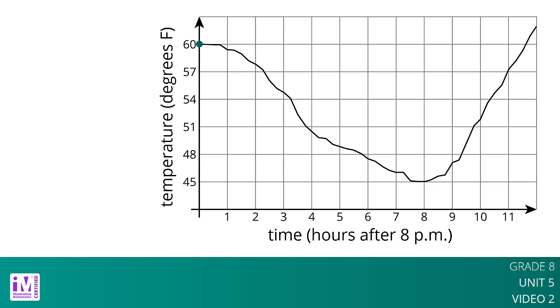It decreases during the night, reaching its lowest point at 8 hours after 8 PM or 4 AM. Then it starts to increase. The point shown tells us that 12 hours after 8 PM, at 8 AM, the temperature reaches 62 degrees Fahrenheit.